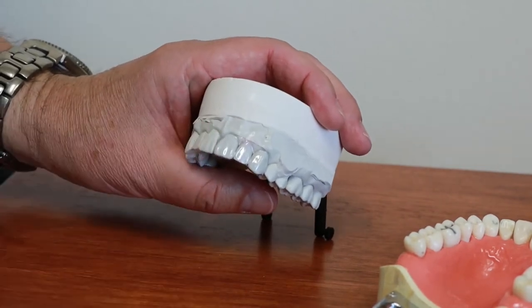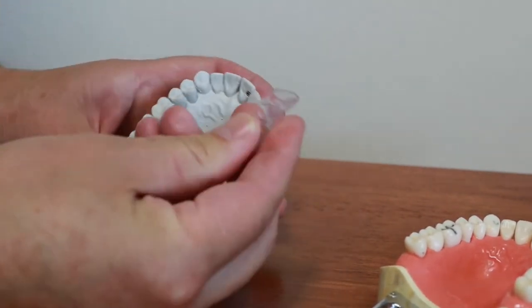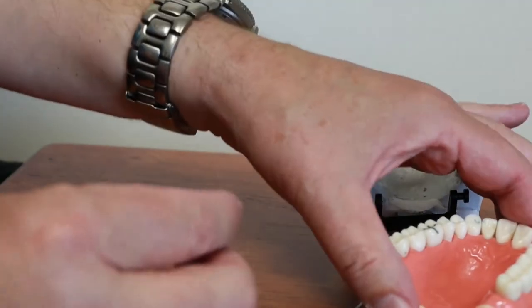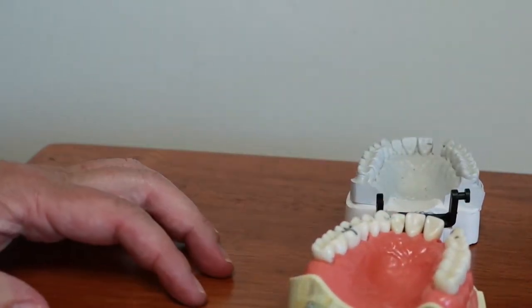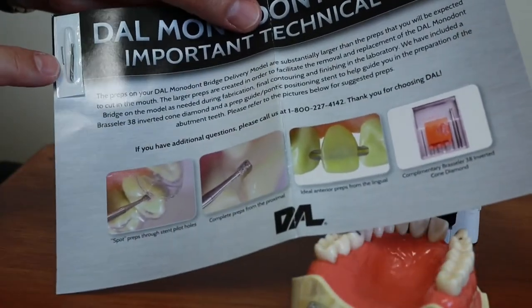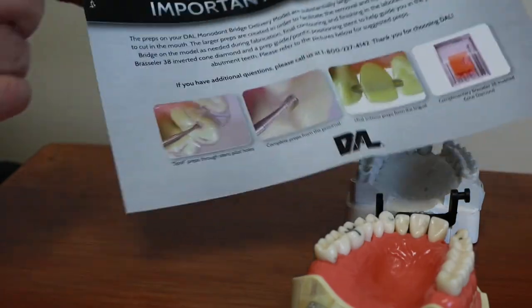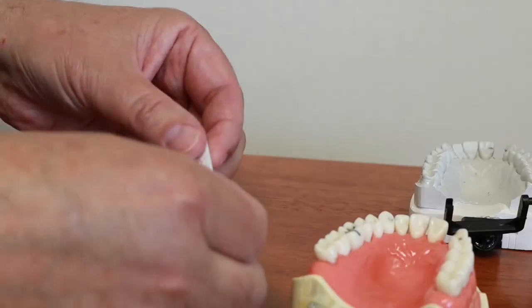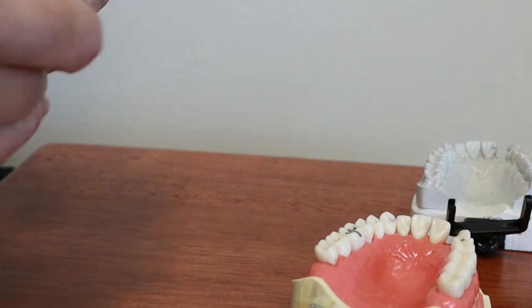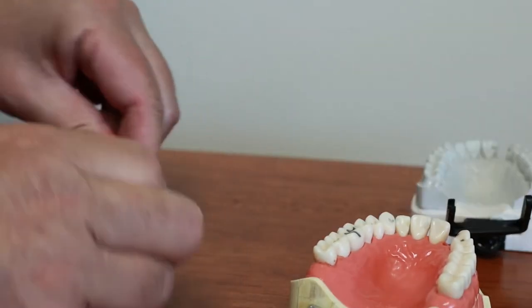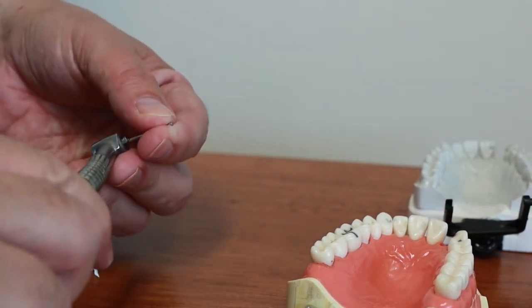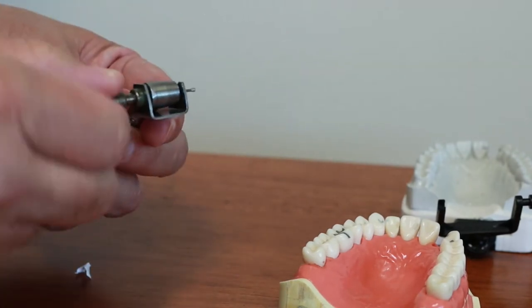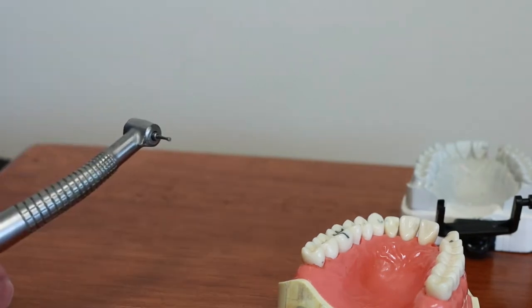I got the Maryland bridge back from the lab. It includes this handy dandy little prep guide and the bridge itself. And in addition to the bridge and the prep guide it also included a special burr, an inverted cone diamond that Dental Arts Lab recommends we use to make the preps for the bridge. Let me put the burr in my hand piece. Just using an air driven hand piece.